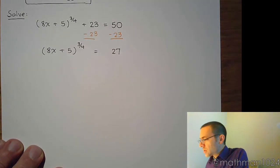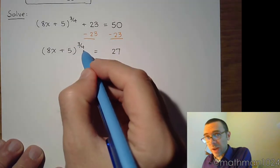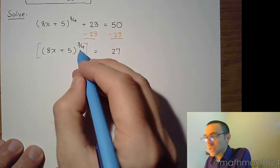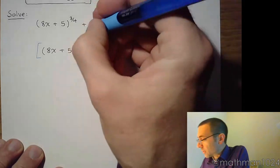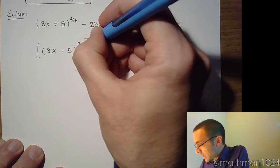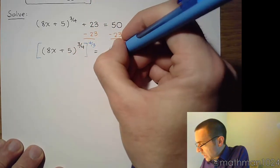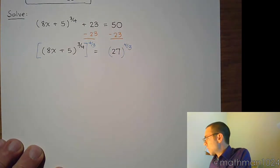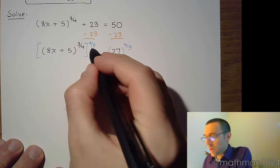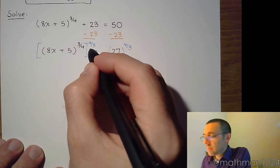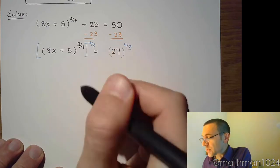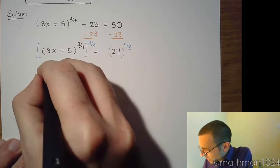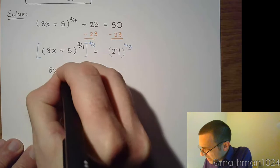Now to undo this radical, we've got to use the power property. So that means you need to raise each side to a power that is the reciprocal of this. So the reciprocal of 3 over 4 is 4 over 3, and do that over here on the right side as well. When you do a power to a power, you end up multiplying those powers. And since this is a fraction times its reciprocal, when you multiply those, you get 1. So on the left side, we just have 8x plus 5.